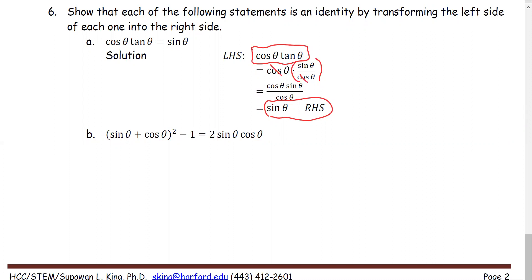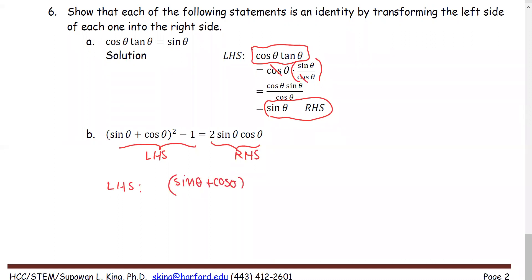At part B, we have the left-hand side as the quantity sine theta plus cosine theta squared minus 1, and the right-hand side is 2 times sine theta cosine theta. We're going to start with working on the left-hand side expression: sine theta plus cosine theta quantity squared. We're going to expand the square of this one, so sine theta plus cosine theta multiplied by itself.